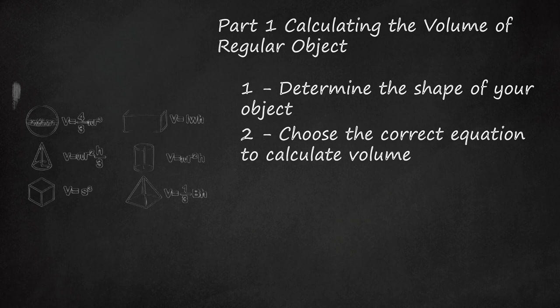Cone: V = 1/3πr²h, where r is the radius of the circular base, and h is the height of the cone.